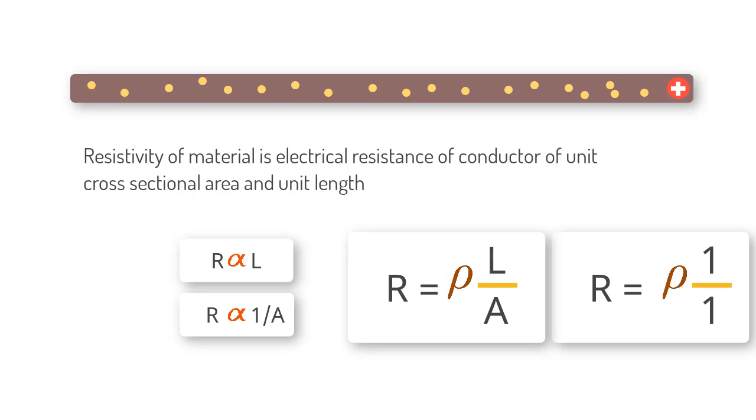Rho is a fundamental property of the material like density, melting point, etc. We just derived the relationship between resistance, length, area and resistivity in a slightly intuitive way.